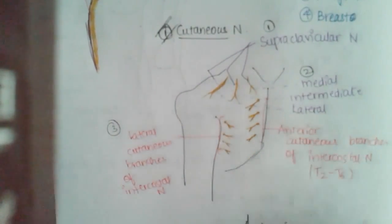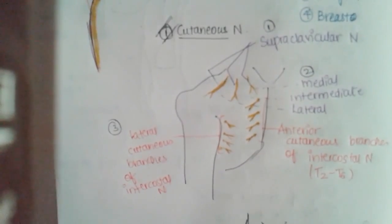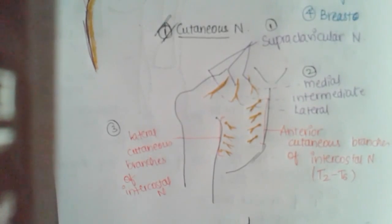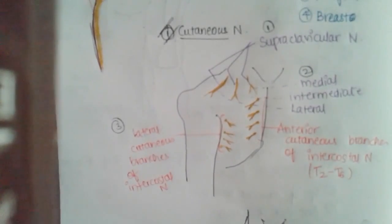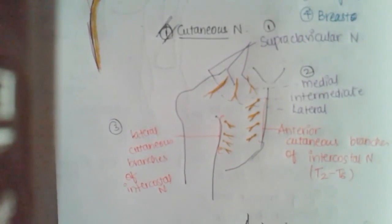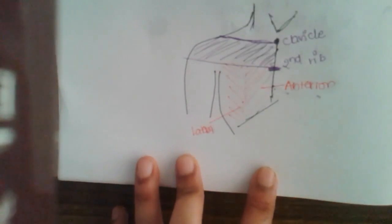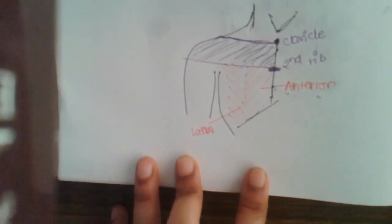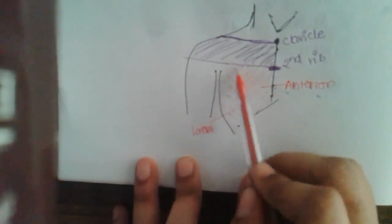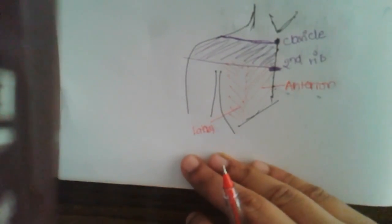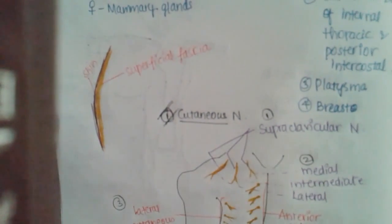The anterior cutaneous branches supply the medial part of the chest, while the lateral cutaneous branches supply the lateral part. So there are two groups: the anterior which supplies the medial part, and the lateral which supplies the lateral part of the chest wall.